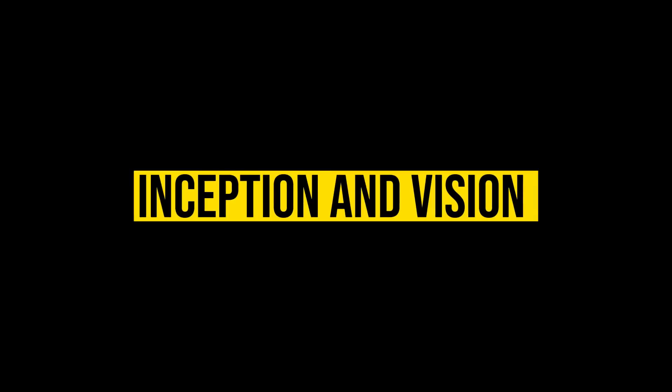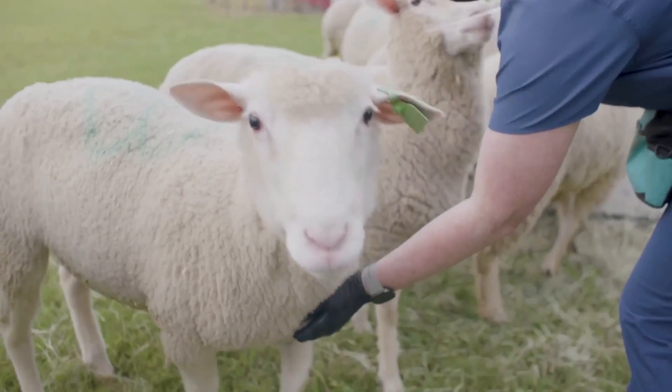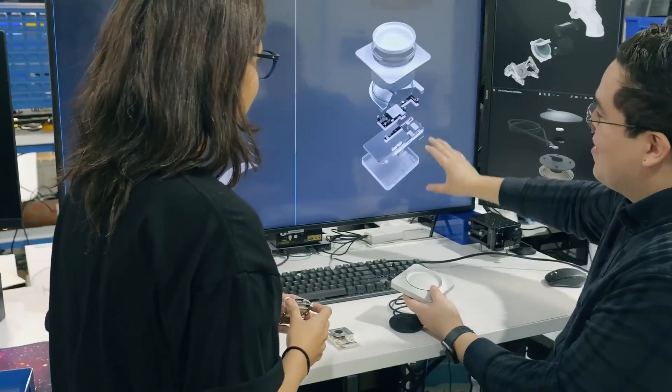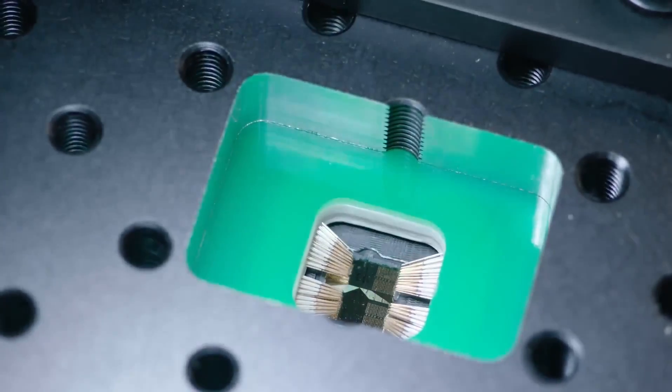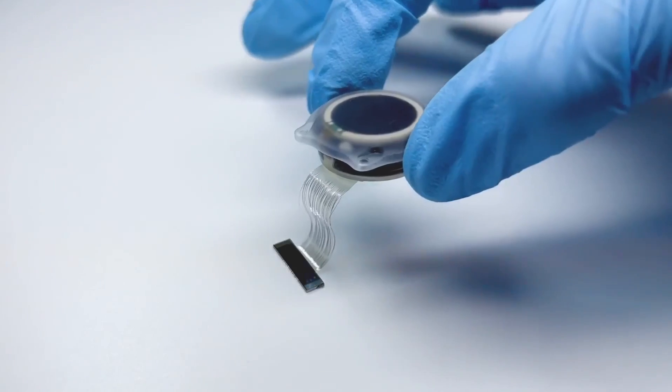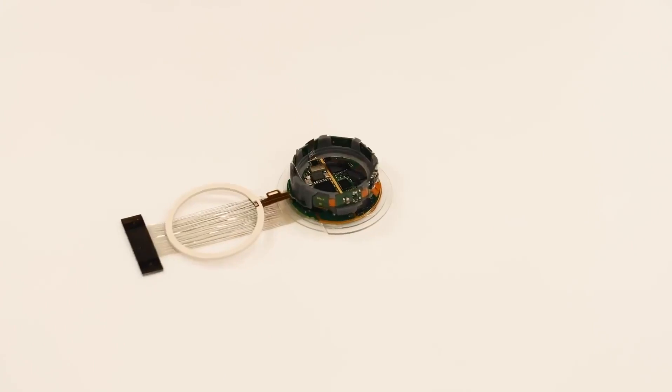Inception and Vision: The idea for Neuralink emerged from Elon Musk's concerns about the existential risks posed by artificial intelligence and his fascination with human-machine symbiosis. Musk envisioned a future where BCIs could augment human capabilities, enabling seamless interactions with machines and accelerating progress in various domains.